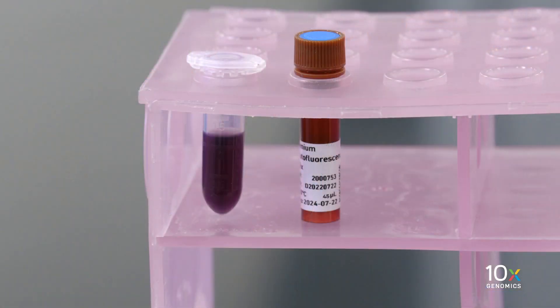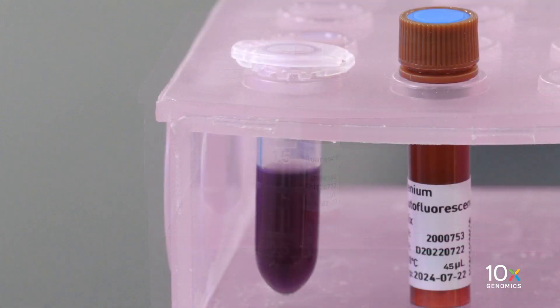Next, we will review the autofluorescence quenching protocol. The autofluorescence mitigation step in the assay workflow utilizes a 10x proprietary quencher. Dilute the autofluorescence mix as detailed in the user guide. The diluted quencher is purple in color.